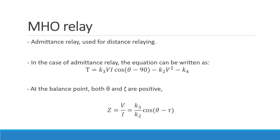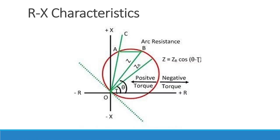The Mho relay is also called the admittance relay and is also used for distance protection. For the admittance relay, the torque equation can be rewritten as T = K3·V·I·cos(θ − τ) − K2·V² − K4. At the balance point, the impedance V/I is given by (K3/K2)·cos(θ − τ). In the RX plane, the Mho characteristic is also a circle but positioned in the positive or forward direction. Inside the circle is the positive torque region, outside is the negative torque region, and the setting impedance is given by Z = R·cos(θ − τ).